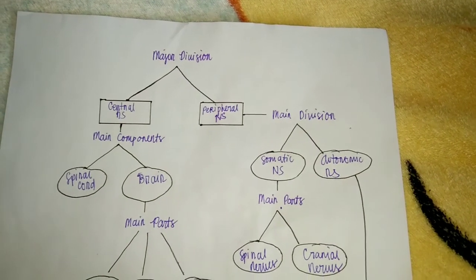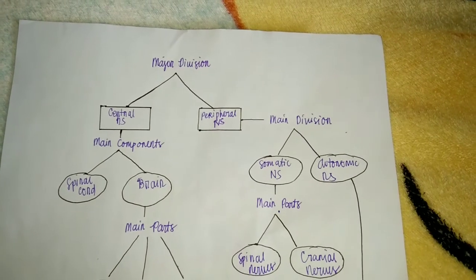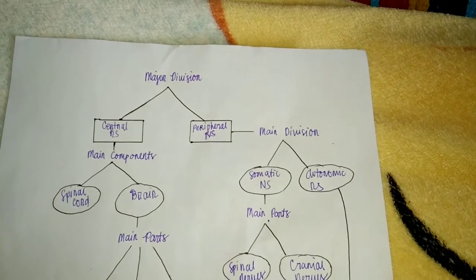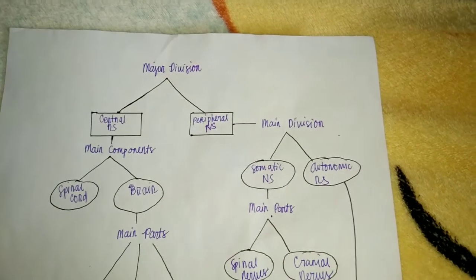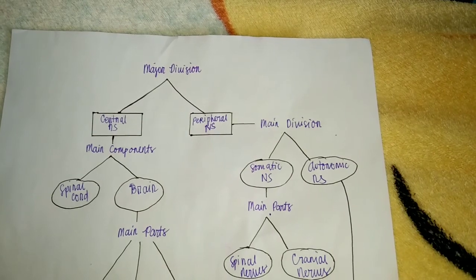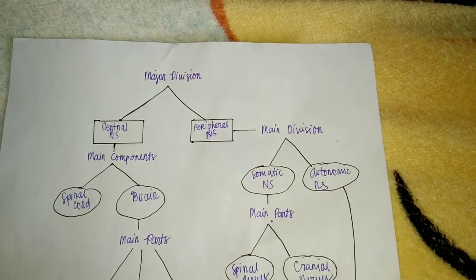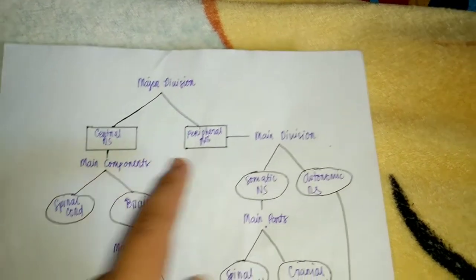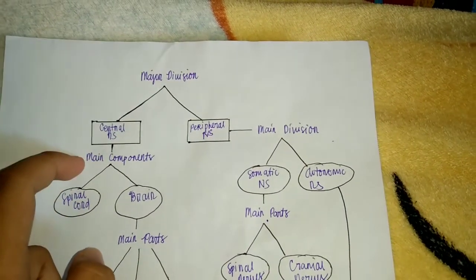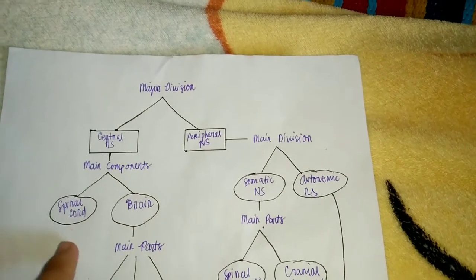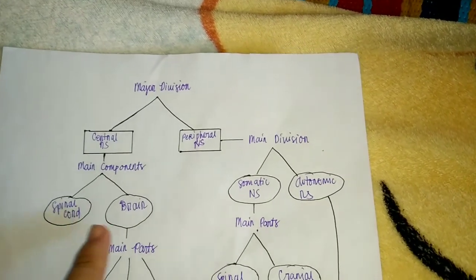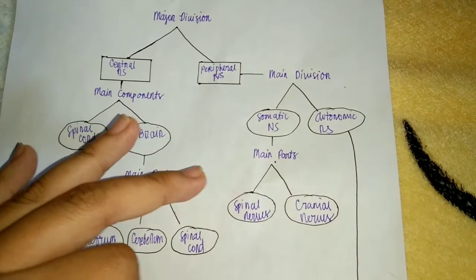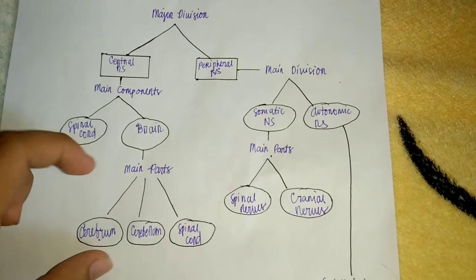This is a simple representation to help understand the major divisions and parts of the nervous system. We have two major divisions: the central nervous system and the peripheral nervous system. The central nervous system consists of two main components: the spinal cord and the brain. The brain consists of three main parts: the cerebrum, cerebellum, and brainstem.